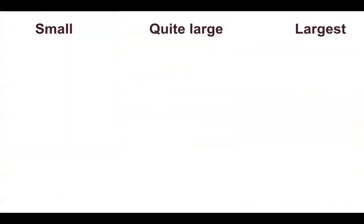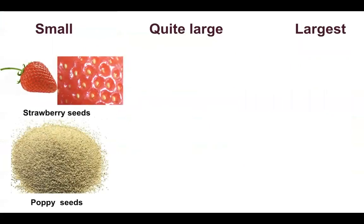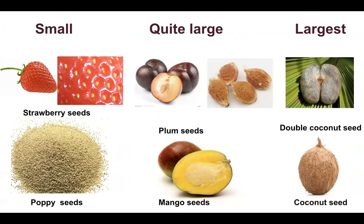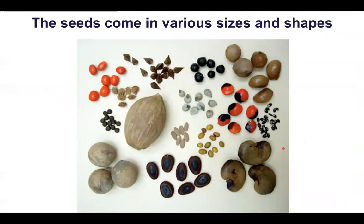Seeds can be small, quite large, or very large. Small seeds include strawberry seeds and poppy seeds. Large seeds include the plum seed and the mango seed. Extremely large seeds include the double coconut seed, which is the largest seed in the plant world, and the coconut seed. Seeds also have various shapes and even various colors, all adapted according to the plant species on which they grow.